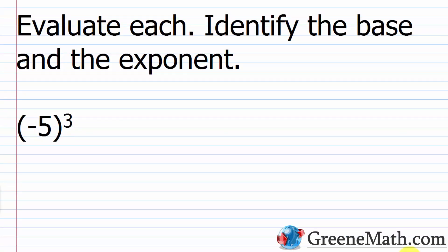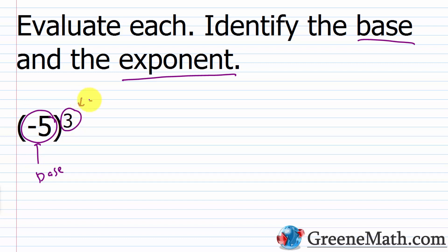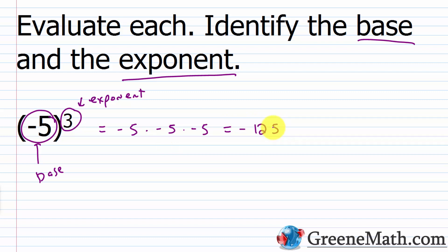Let's evaluate each and identify the base and the exponent. We have negative 5 wrapped inside parentheses, cubed. The base is negative 5 and the exponent is 3. To evaluate this I have negative 5 times negative 5 times negative 5: negative 5 times negative 5 is 25, and 25 times negative 5 is negative 125. Again, it didn't matter that I had parentheses around the base here because we have an odd exponent — 3 is an odd number — so we end up with an odd number of negative factors, giving us a negative product: negative 125.